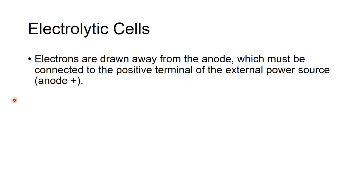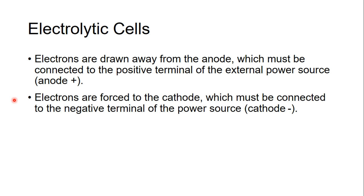In electrolytic cells, electrons are taken from the anode. So for this to happen you have to stick your anode to the positive terminal of your external power source. And electrons are forced to the cathode so you need to stick it to the negative terminal of your power source. Think of your power source with a positive end. It takes electrons from your anode and all your electrons are at your negative end of your power source which can then go to your cathode.